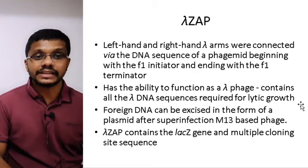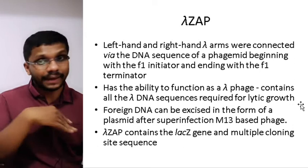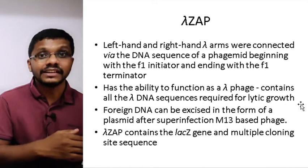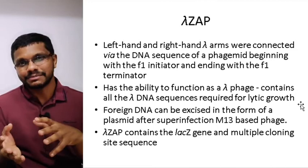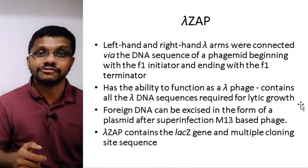One example of a phagemid is Lambda ZAP. Lambda ZAP is an excellent and very versatile vector. It has a gene region from the lambda phage and can be packaged into a lambda phage using either in vitro packaging or by having all the genes essential for producing a functional lambda phage. It contains the cos site, the F1 origin of replication, and the lambda lacZ region. It can act like a plasmid, produce functional lambda particles, and produce M13 particles.